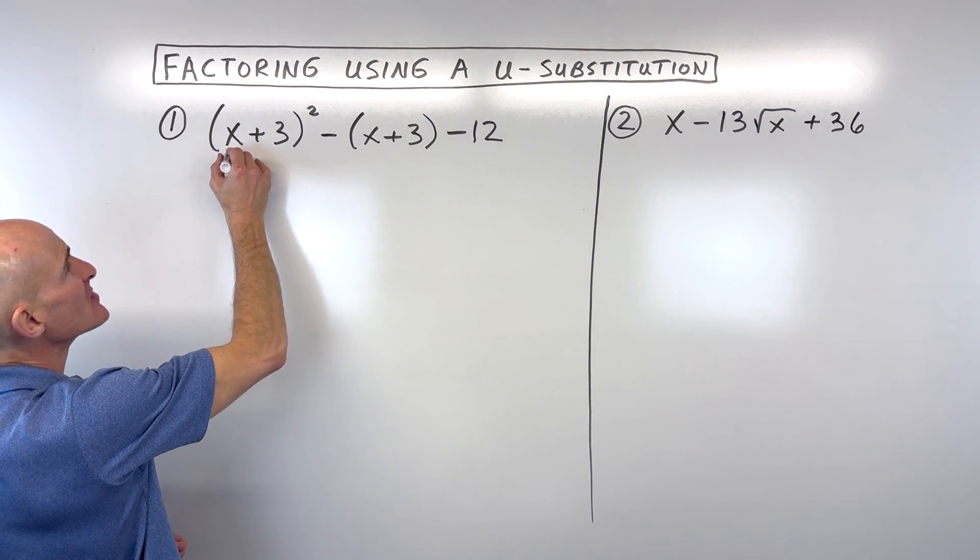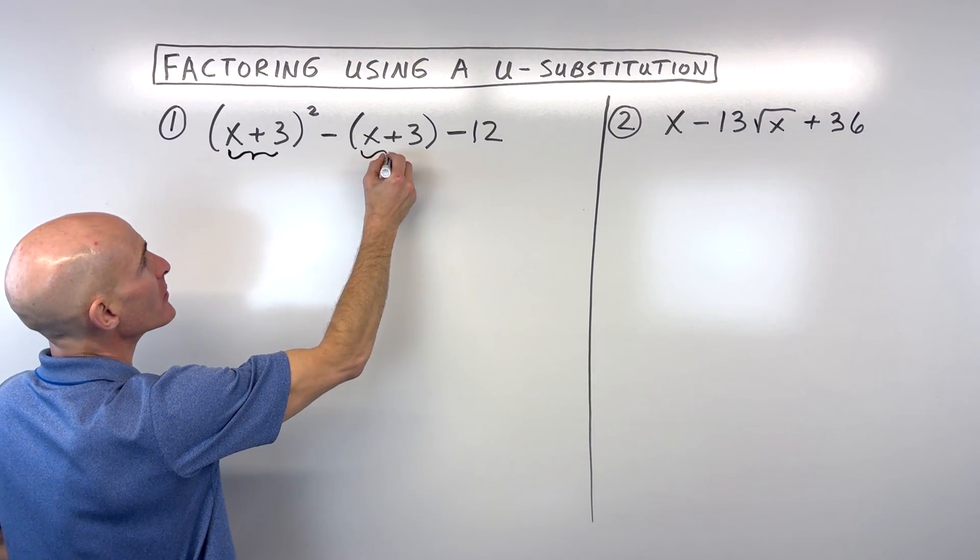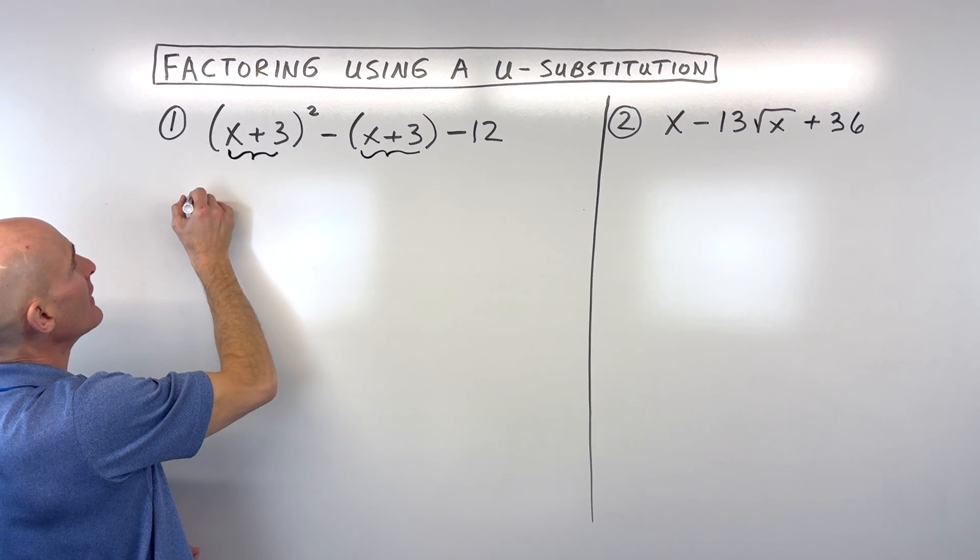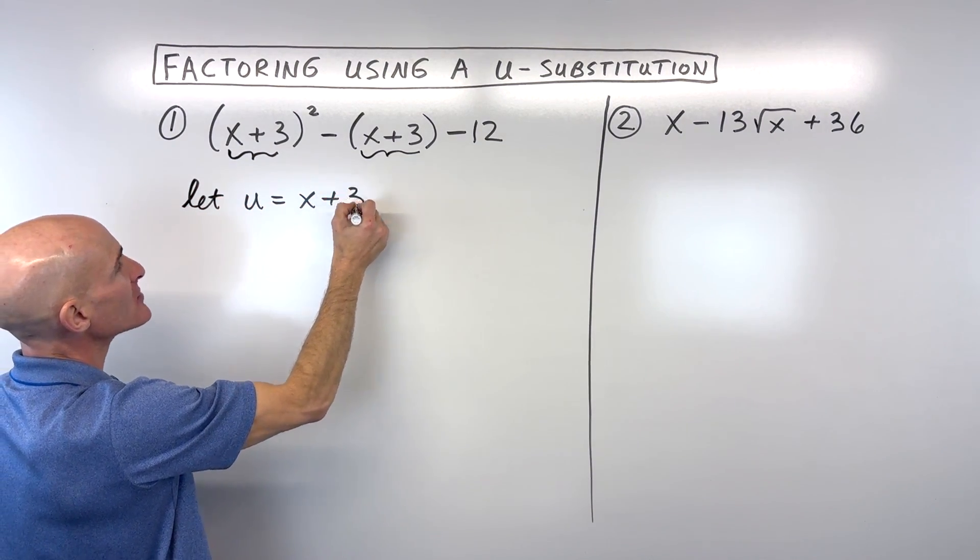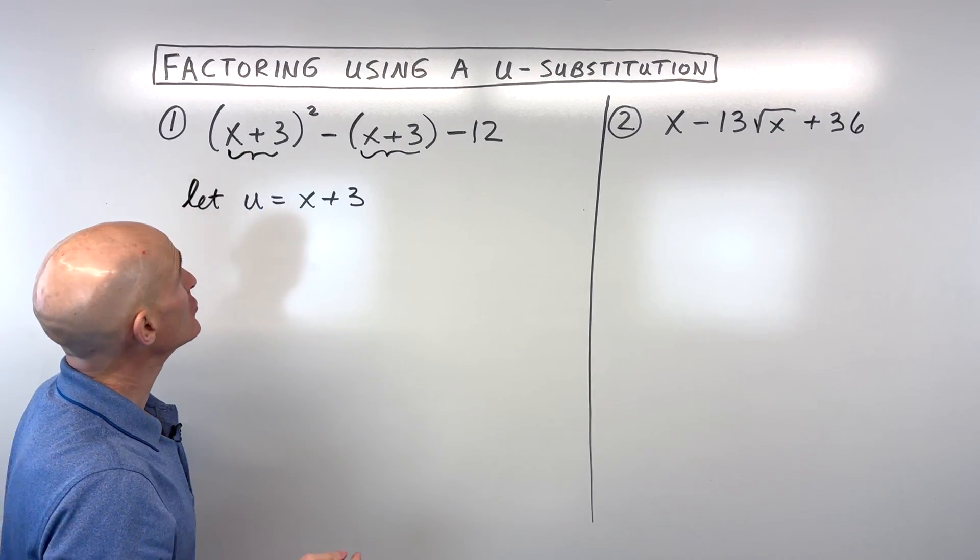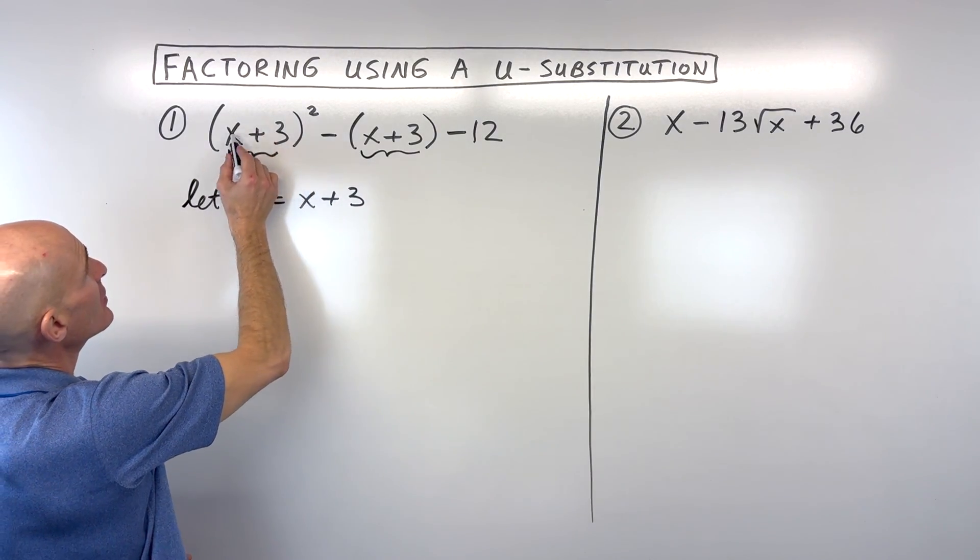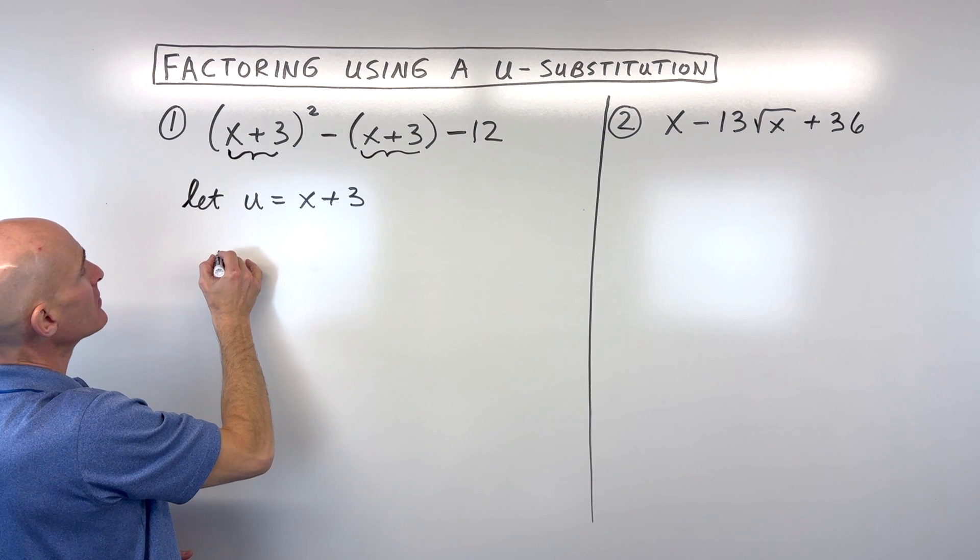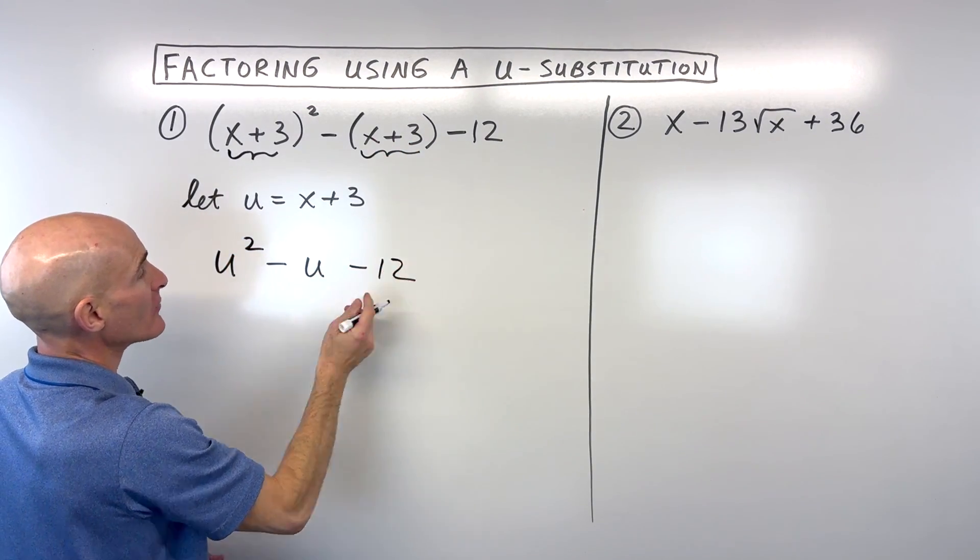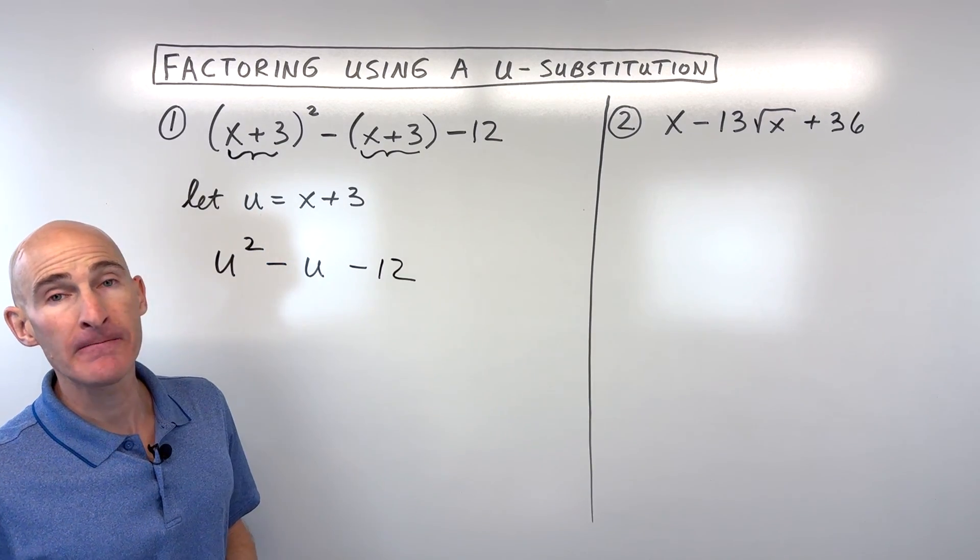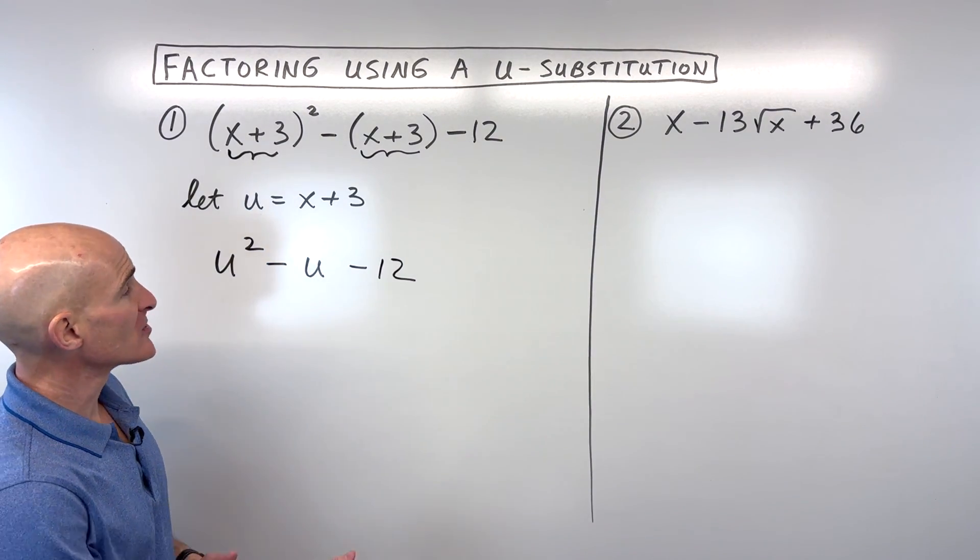So in this case, because you can see we have this same group here, let's go ahead and say let u equal x plus 3. So now what we can do is we can say, if this is u, this is going to be u squared, minus this is u, minus 12. A lot simpler now, wouldn't you agree?